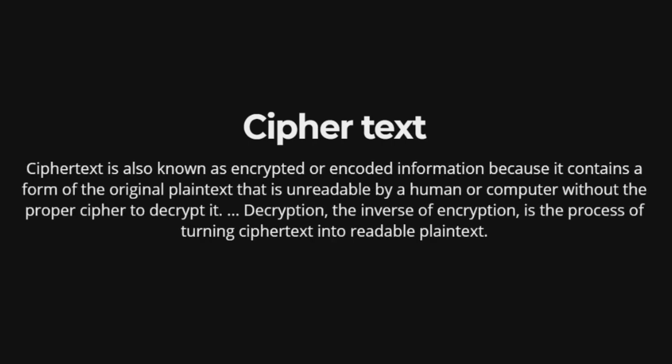Ciphertext is also known as encrypted or encoded information because it contains a form of the original plaintext that is unreadable by a human or computer without the proper cipher to decrypt it. Decryption, the inverse of encryption, is the process of turning ciphertext into readable plaintext.